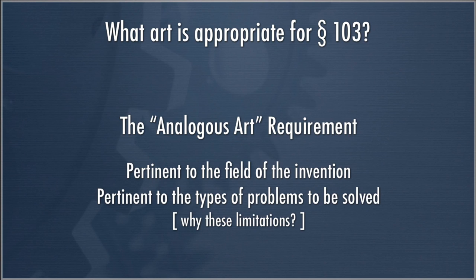Why don't we have an analogous art requirement for Section 102? If our concern is that people are going to randomly pick here and there to find relevant art, why not have that limitation for Section 102 as well? We don't. For novelty purposes under Section 102, there is no limit — as long as you find all of the elements in one reference, it's going to be invalidating. I'll leave it for you to think about why we might not have an analogous art requirement in 102 when we do in 103.